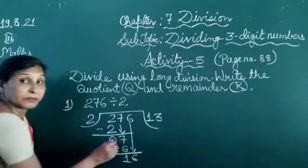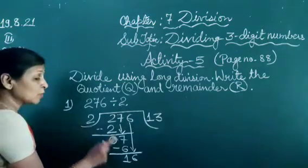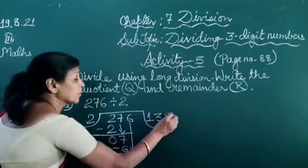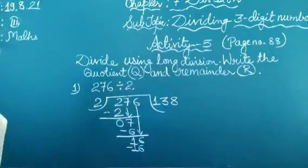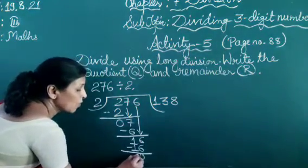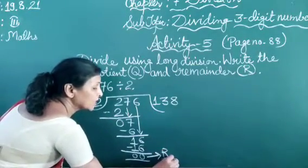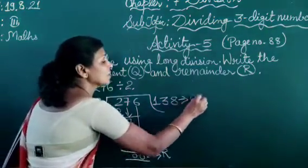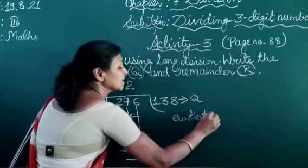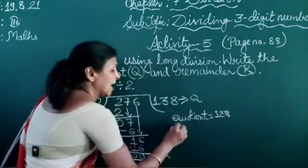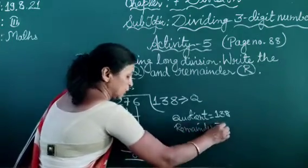Then we write this 6 here. Now in the table of 2, 16 comes — that is 8 times. We write 8 here and we write 16 here. Now we subtract: 0. This is our remainder, we write R. And this is our quotient, we write Q. Quotient is equal to 138 and remainder is equal to 0.